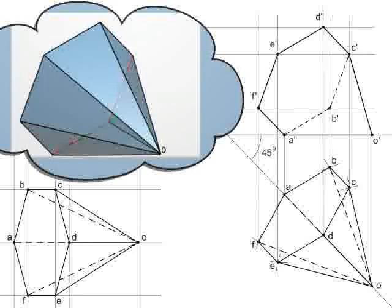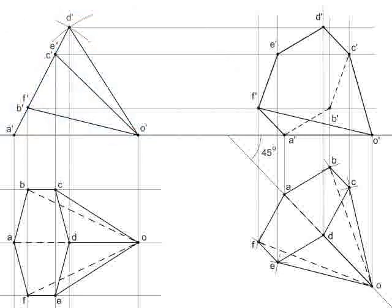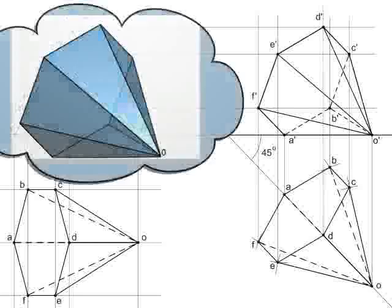Join other points with solid lines and slant edge B dash O dash is dotted as it is hidden.